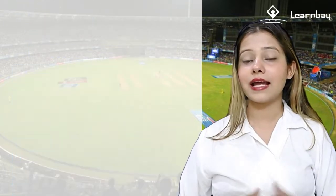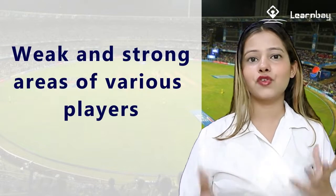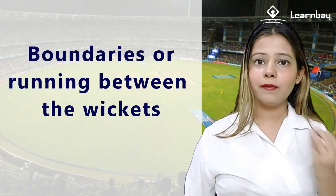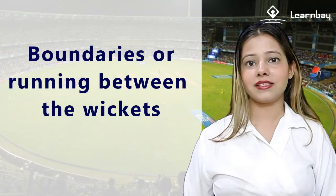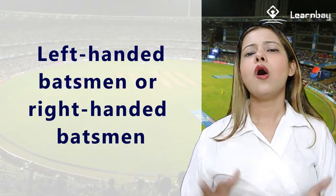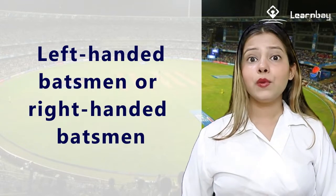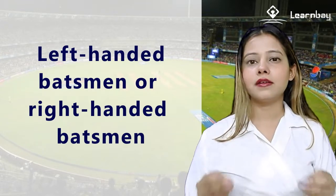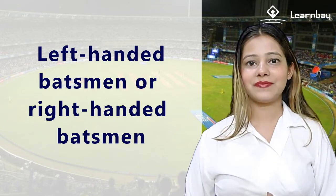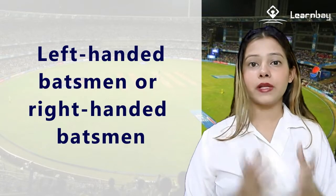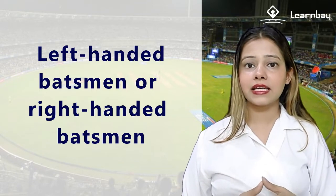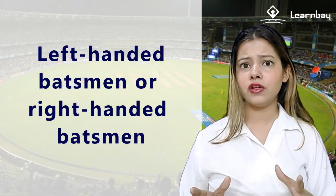This data allows us to understand the weak and strong areas of various players, such as whether a player is good at hitting boundaries or running between the wickets, whether a bowler performs better against left-handed or right-handed batsmen, and whether a batsman performs better against spinners or fast bowlers. During the auctioning of players, IPL teams with less money will want to know if the player they are getting is worth the money paid.